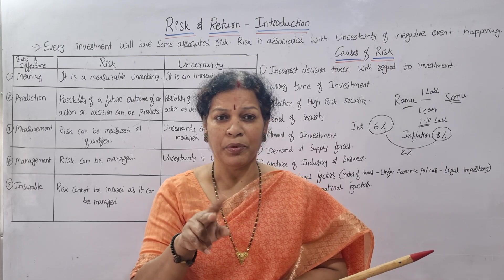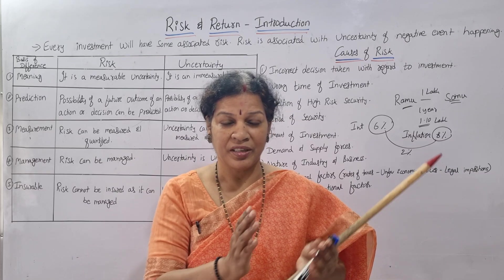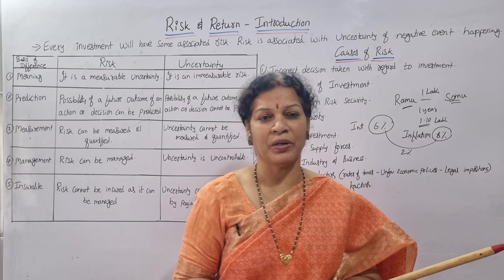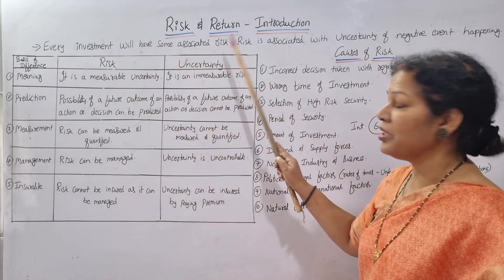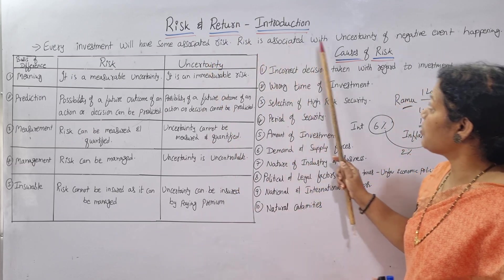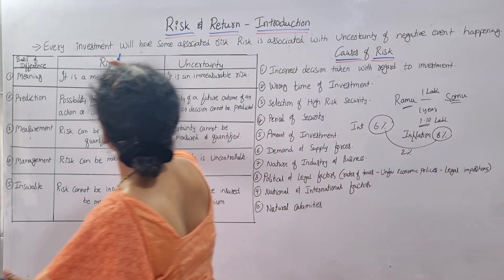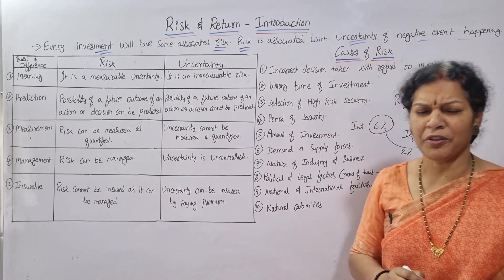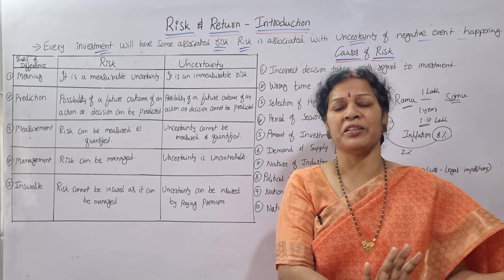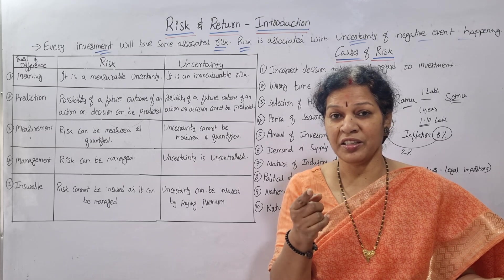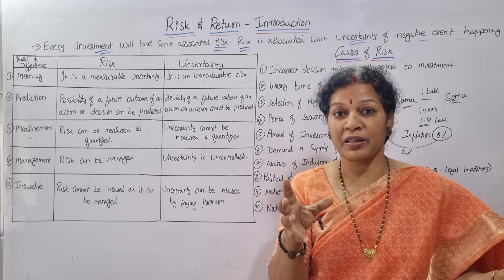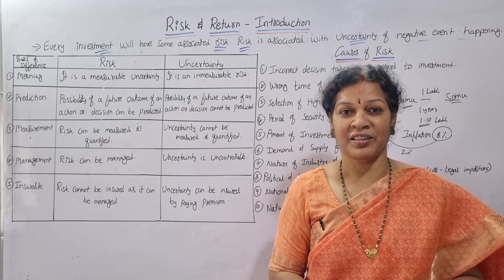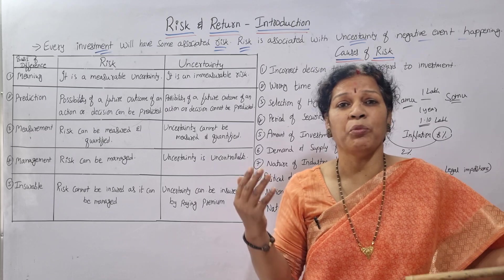Risk and uncertainty are both interrelated and look similar, but there is a difference. Every investment has some associated risk, and risk is associated with the uncertainty of a negative event happening. Uncertainty is something that happens unexpectedly — it cannot be anticipated. Risk, on the other hand, is something you know is a possibility. With risk, you have some idea; with uncertainty, you have no idea at all.